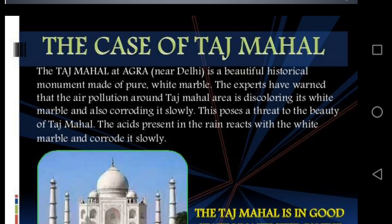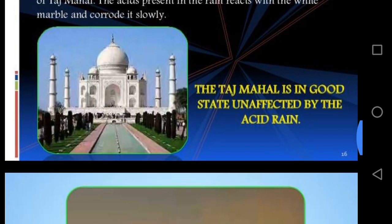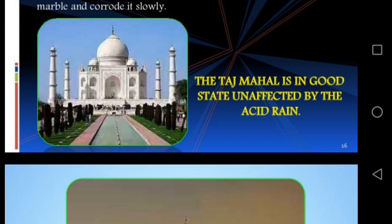The acid present in rain reacts with the white marble and corrodes it slowly. Therefore, the Supreme Court has taken several steps to save the Taj Mahal. It has ordered industries in the Taj zone to switch to cleaner fuels like CNG and LPG. Moreover, automobiles should switch over to unleaded petrol in the Taj zone. You can see figures showing the Taj Mahal in its good state and after being affected by acid rain, where its color has become dull.